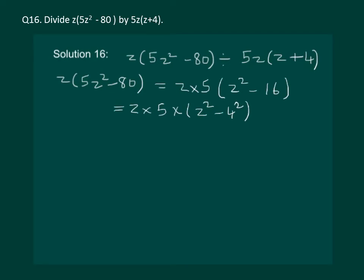We know the identity a square minus b square is equal to a plus b into a minus b. Let us use this identity to further factorize our numerator.